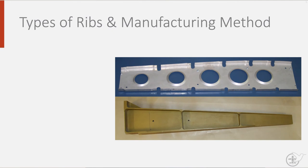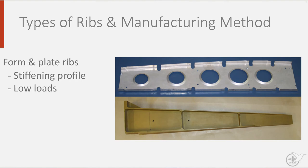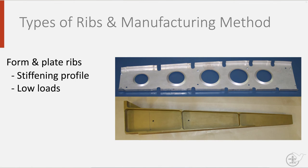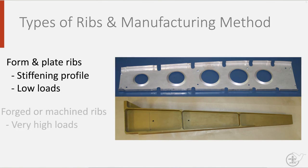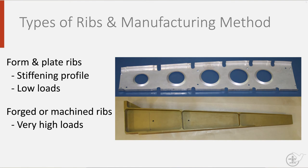The design and the way ribs are manufactured are influenced by the load. If a rib has relatively low design loads, you will perhaps select a rib that is formed from sheet or plate material. You can create extra stiffness by adding stiffening profiles to that rib, as can be seen from the formed aluminium rib with a stiffened circular cut-out. Highly loaded ribs, in contrast, may be forged and machined to ensure they can withstand their design loads.